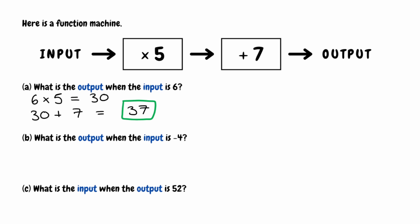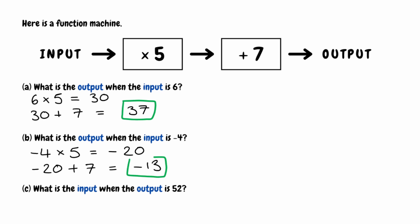For part B, we need to figure out the output when the input is negative 4. Going from left to right and using the original operations, we start with negative 4 and multiply by 5, which gives us negative 20. We then take negative 20 and add 7, so negative 20 plus 7 gives us negative 13. When our input is negative 4, our output will be negative 13.